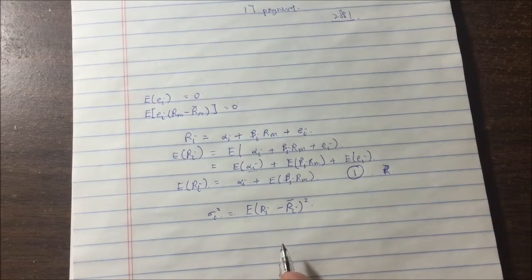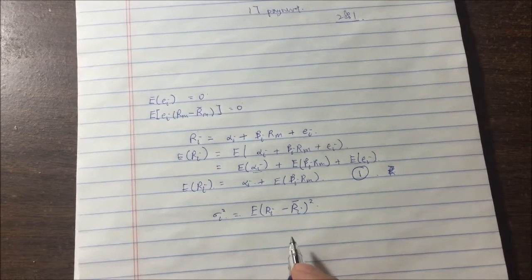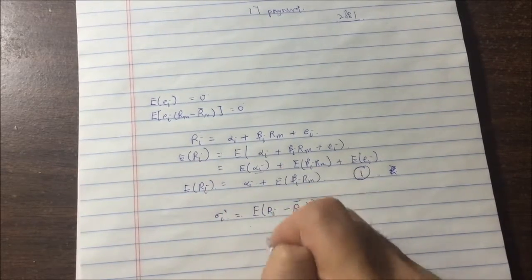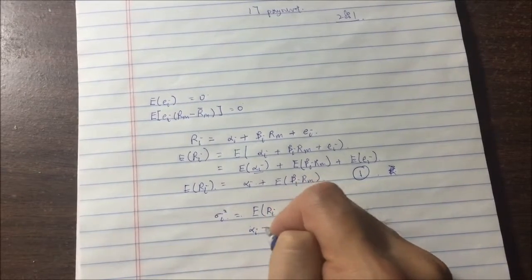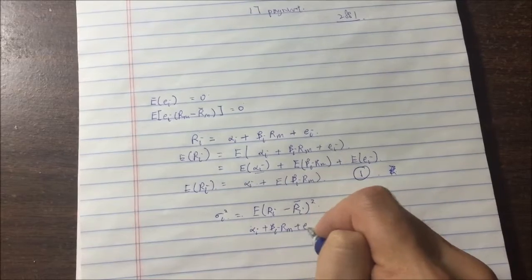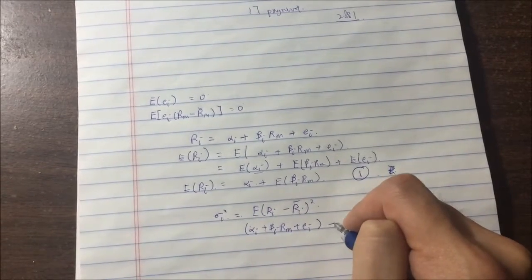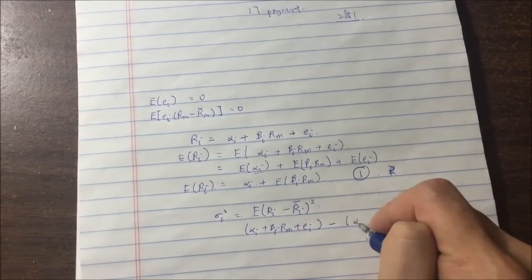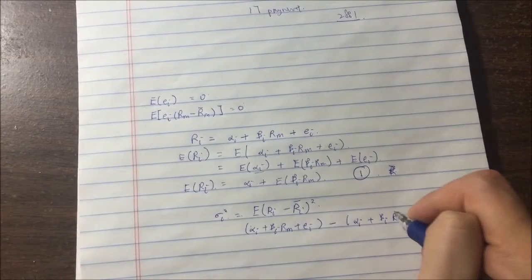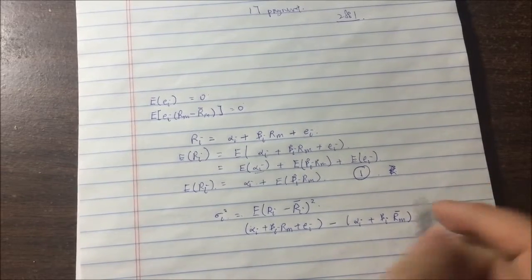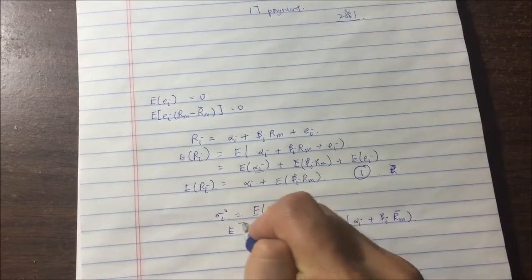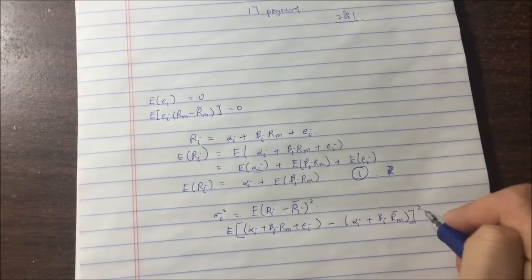So how do we do this? So we have basic substitution above: R = alpha plus beta RM plus εI minus R̄ = alpha plus beta R̄M. Since this is the average, we're not going to have the εI term. And we have the whole thing squared.